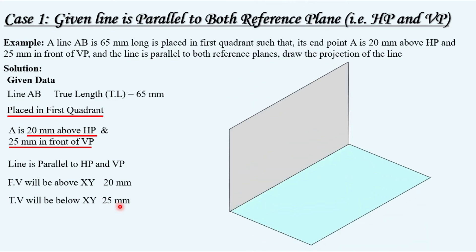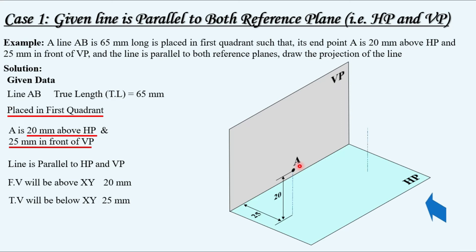Let us understand this in a three-dimensional view. Taking the horizontal plane and vertical plane, with our direction of view from the front, point A is 20 mm above HP and 25 mm in front of VP. Since the line is parallel to both reference planes, the same distances from HP and VP applicable to A are also applicable to B. So B is positioned accordingly and this gives us line AB.